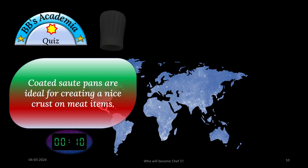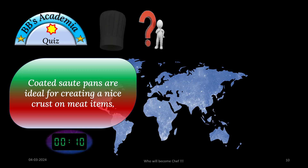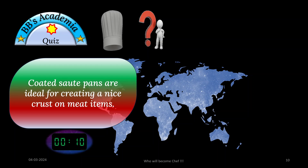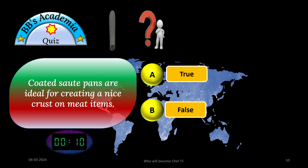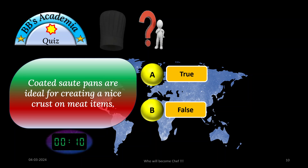Question number 4 says: coated sauté pans are ideal for creating a nice crust on meat items. Two options — true or false. Time allotted: 10 seconds. It begins now.